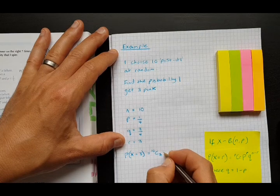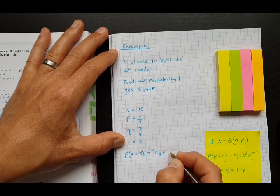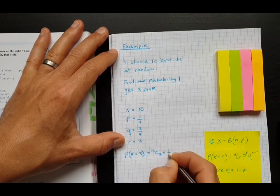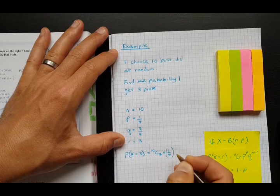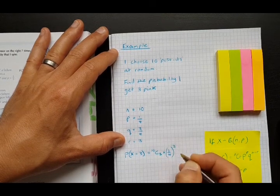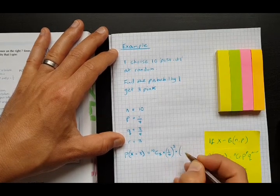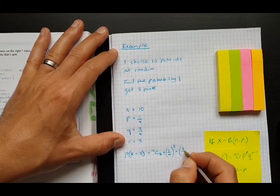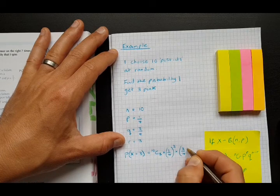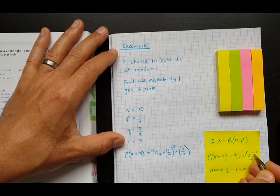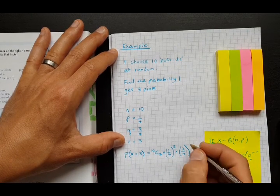Times p to the power of r, so a quarter to the power of three. We get three pinks. Times q, which will be three quarters, to the power of n minus r, so that's 10 take away three, so that's seven. That's our seven failures.